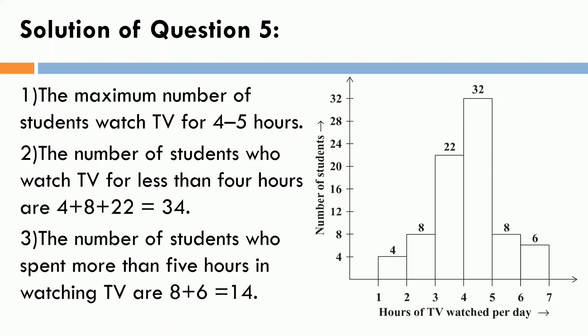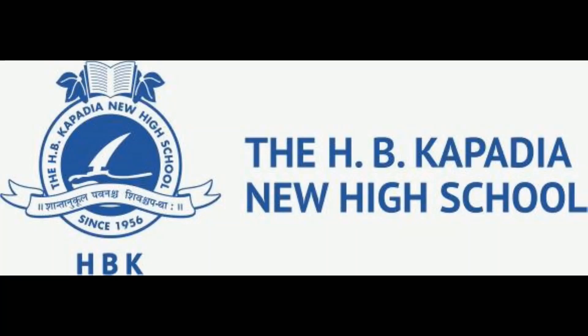Third, the number of students who spent more than 5 hours in watching TV. Again, more than 5 hours, that means, it can be 6 hours or it can be 7 hours. So, number of students for more than 5 hours are 8 plus 6, that is 14. So, students, here we are ending with our chapter number 5, exercise number 5.1. So, in next session, we will move further with new topic. Till then, bye and take care of yourself. Thank you so much.